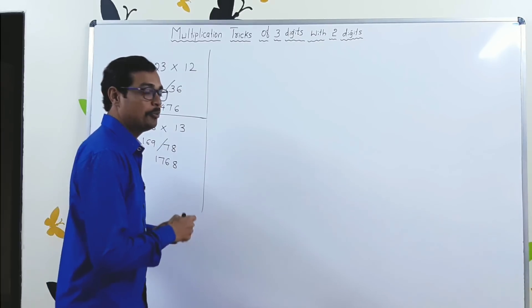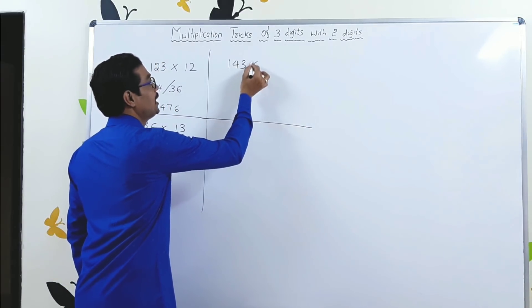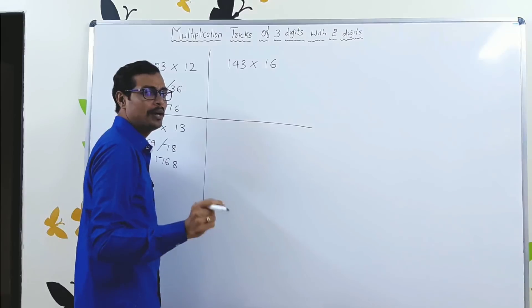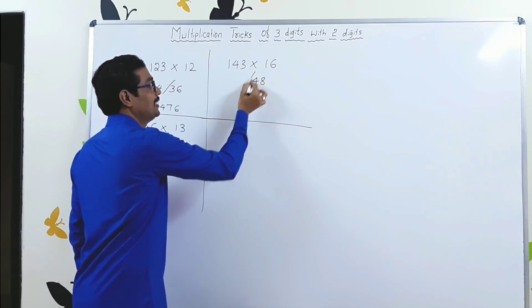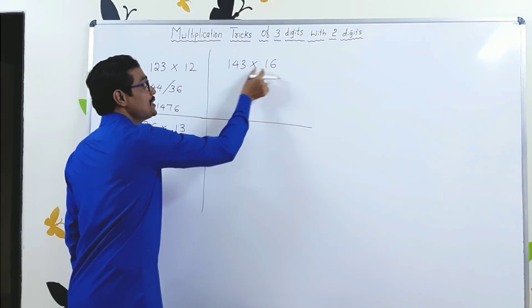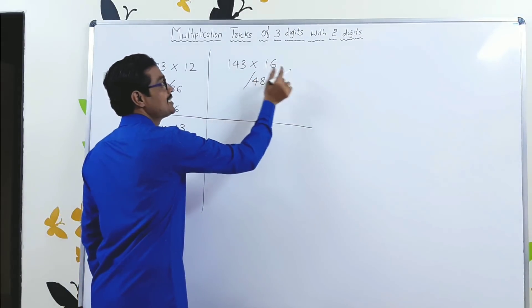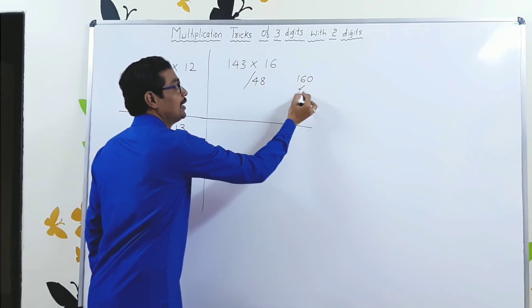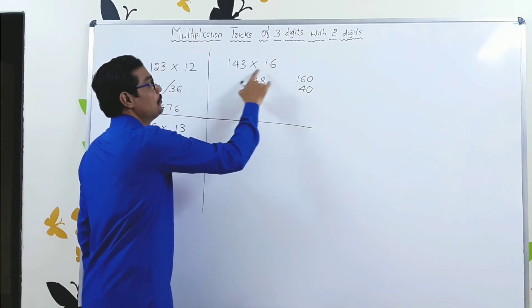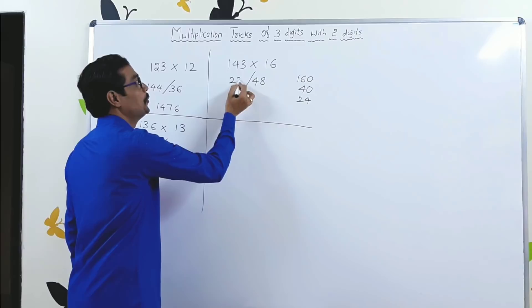Let's take one more example. 143 into 16. Very simple. 16 × 3 is 48. Slash. Now, 16 into 14. Now, we are much more perfect in that. 16, write it as 160. 40, 24. So, total, 224.